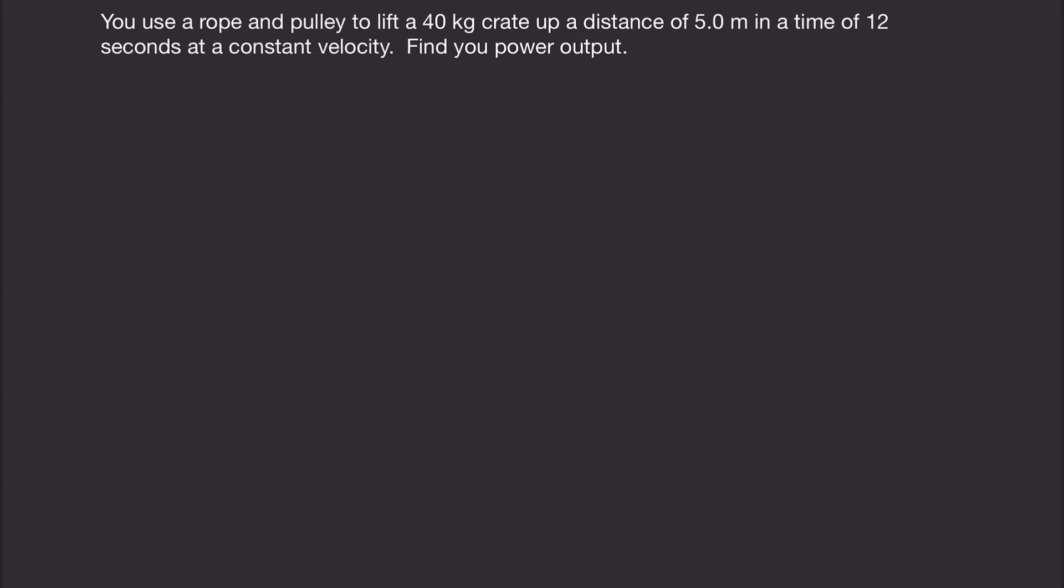In this next problem, you use a rope and a pulley to lift a 40 kilogram crate up a distance of 5 meters in a time of 12 seconds at a constant velocity. And we're asked to find your power output. So we have a crate that we're lifting using a pulley. So the tension in the rope is pulling it up while we're pulling down.